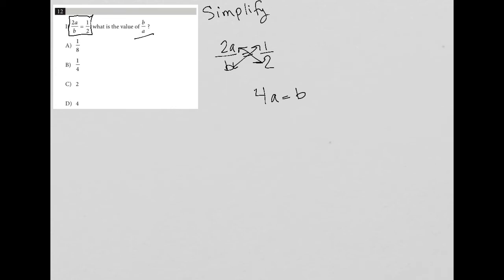Again, I want b over a, so I'm just going to divide both sides by a, leaving me with 4 equals b over a, and therefore that's my answer. b over a is equal to 4.